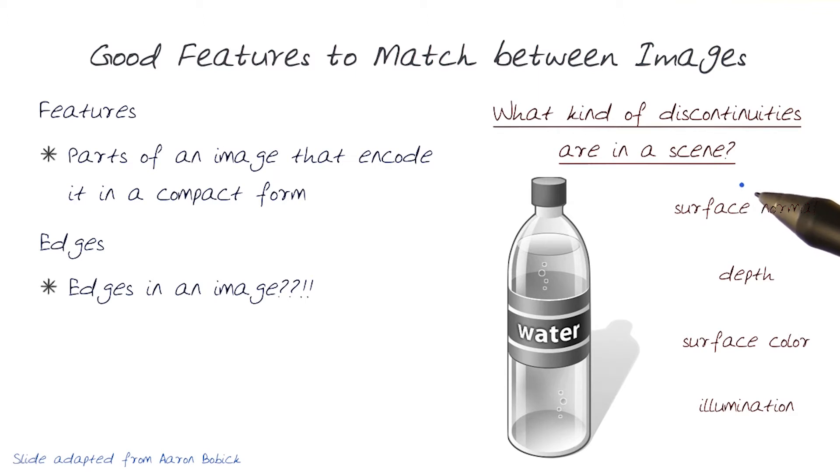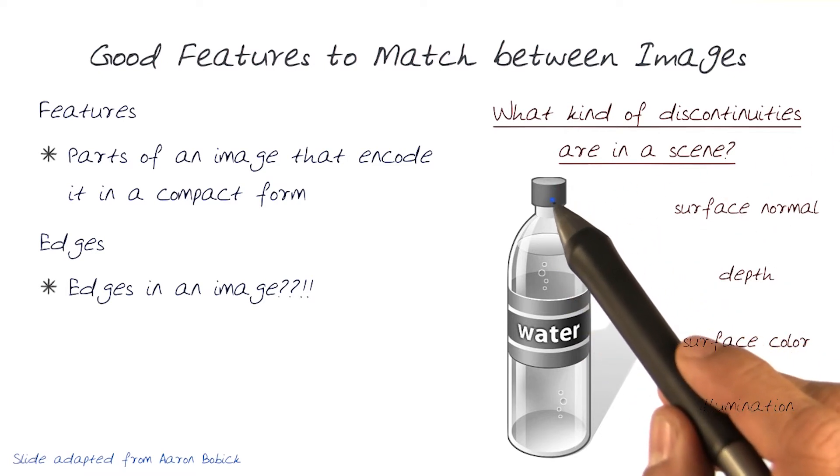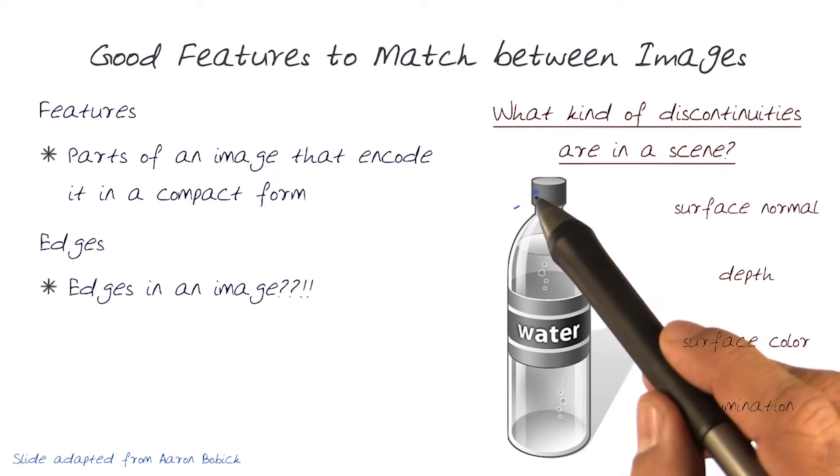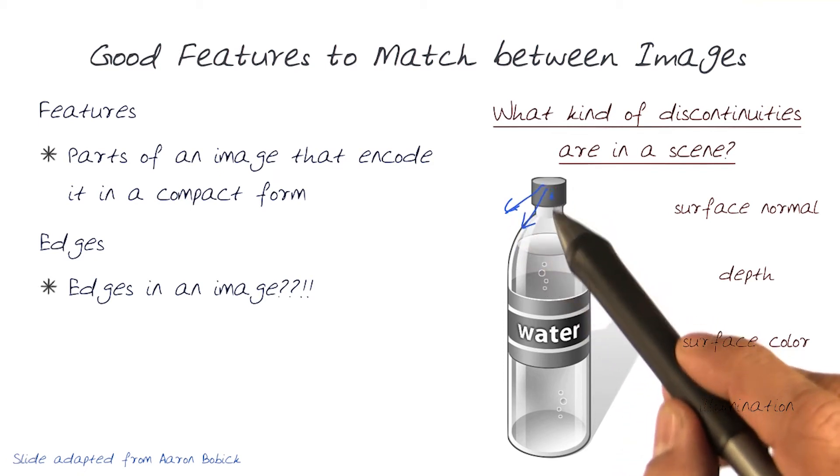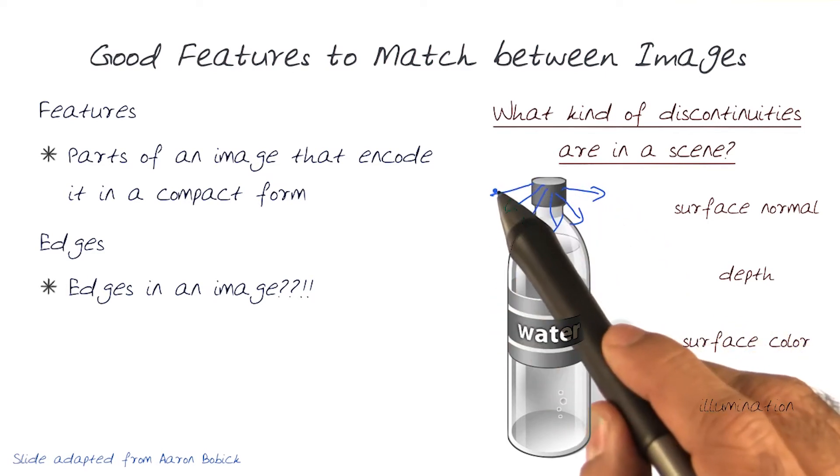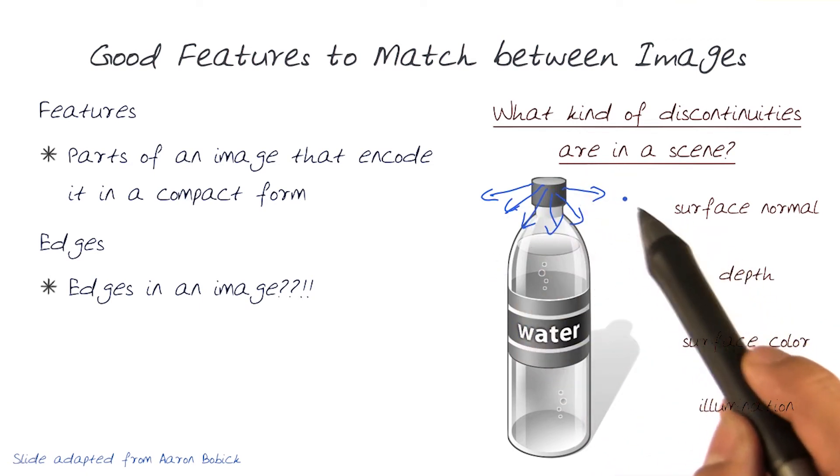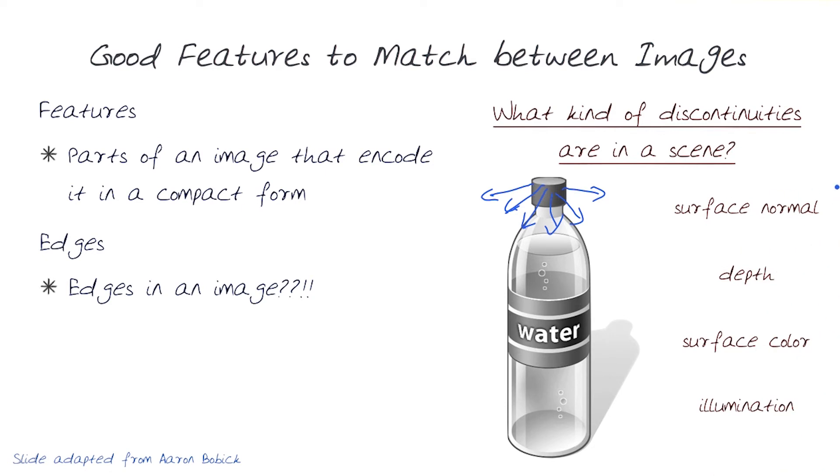We'll look at these more in detail. Let's look at, for example, this water bottle and see what kind of changes in the scene we could look for. At the top of the water bottle, if I was to start drawing surface normals, you would see the surface normals going this way. And after a while, there are no more surface normals because they're on the other side. This form of discontinuity would allow us to start thinking about how we could look for discontinuities in the surface normals.